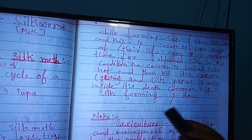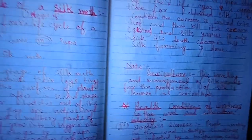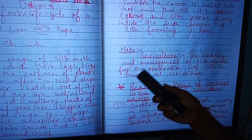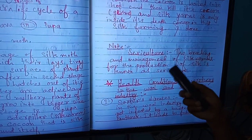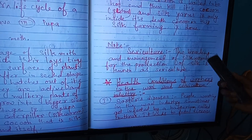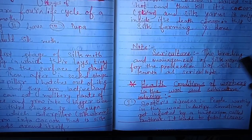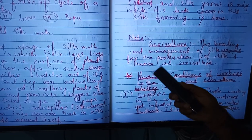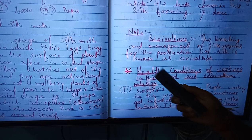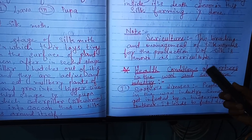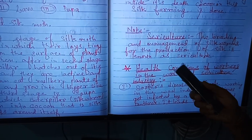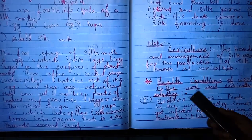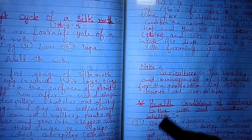During silk farming, the cocoon is boiled in hot water to kill the worm inside, and the silk yarn is retrieved from the dead cocoon. This silk farming process is called sericulture. The breeding and management of silkworms for the production of silk is known as sericulture — a branch of science that deals with the farming of silkworms.